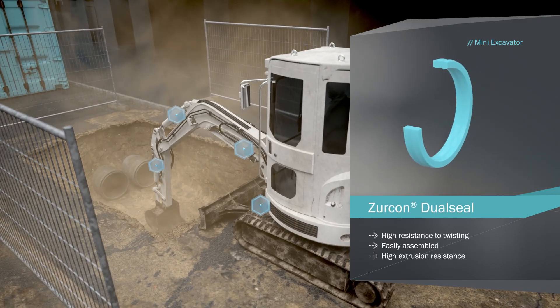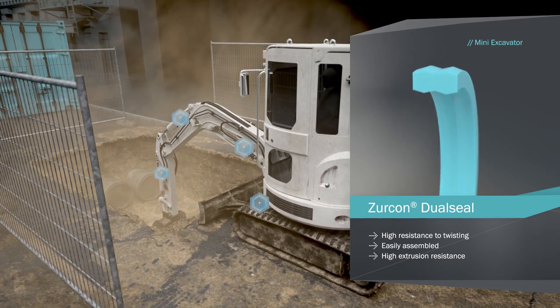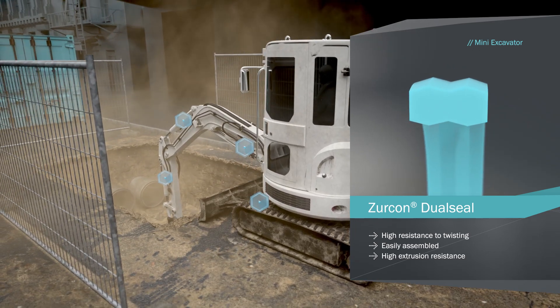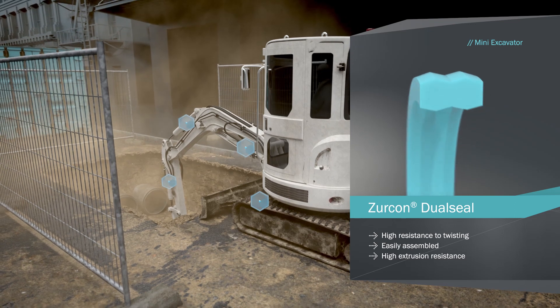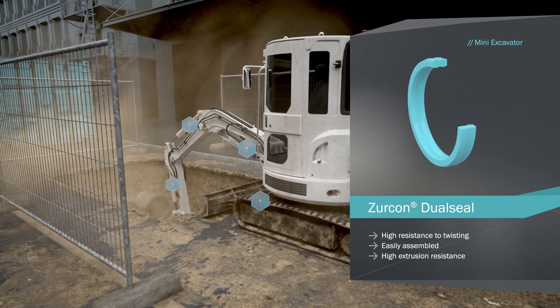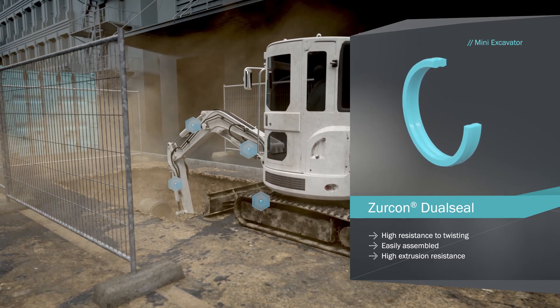Zircon Dual Seal is an effective alternative to an O-ring backup ring combination, resisting twisting and remaining stable at pulsating pressures, further extending service life.